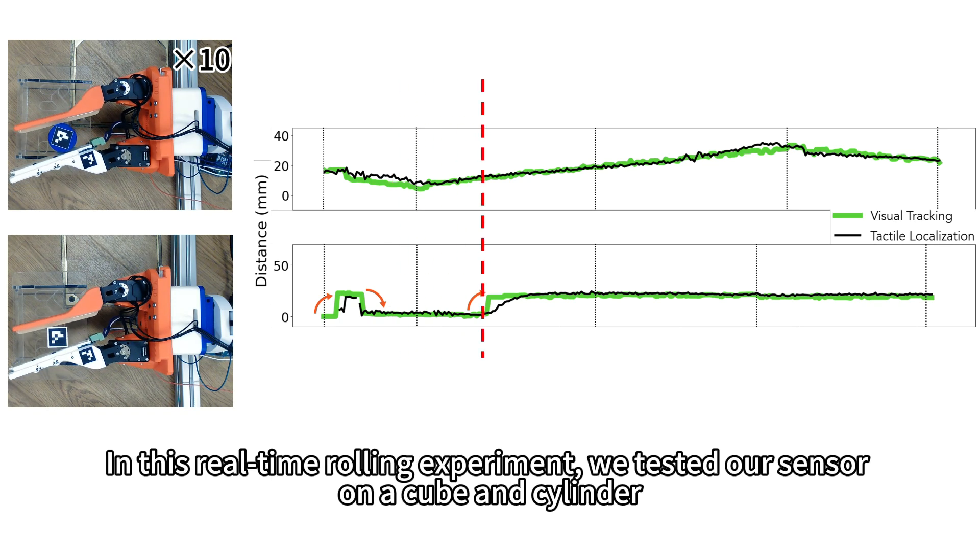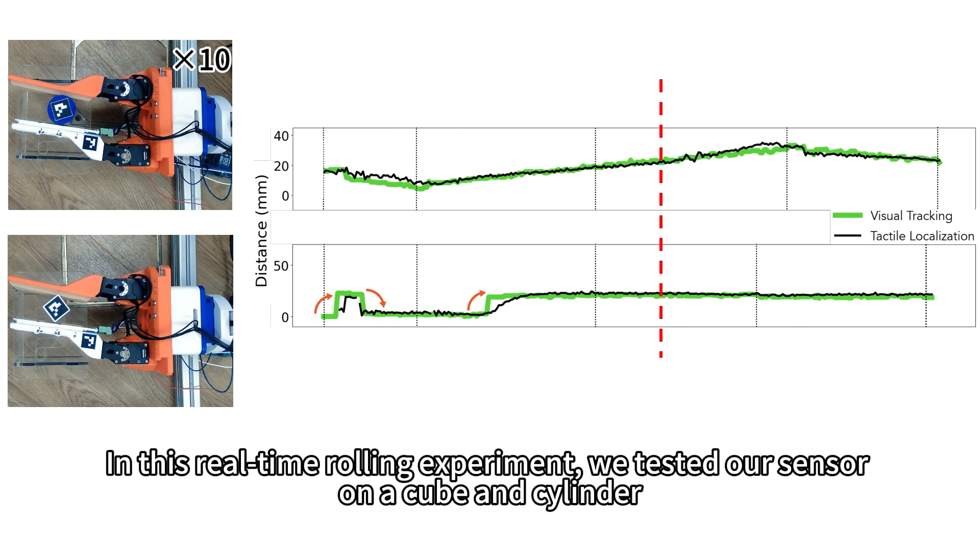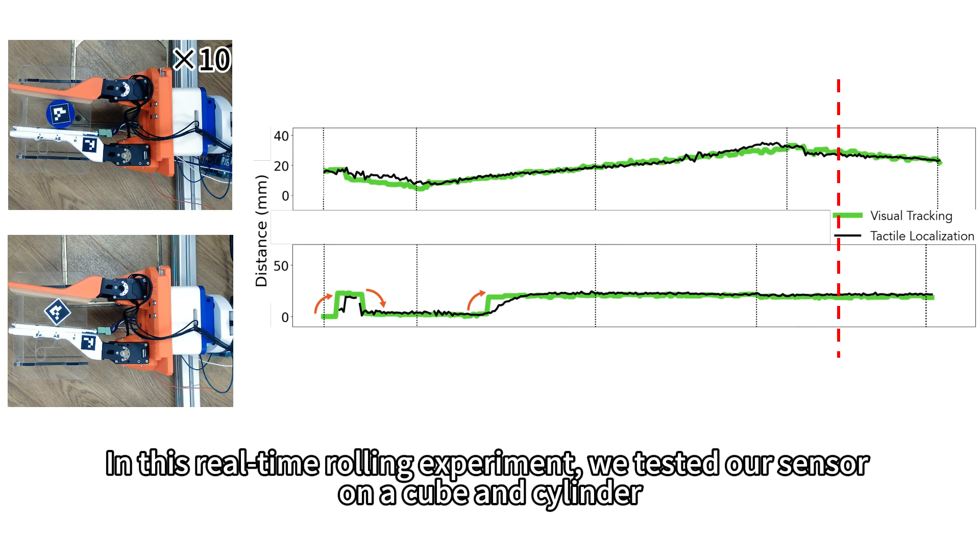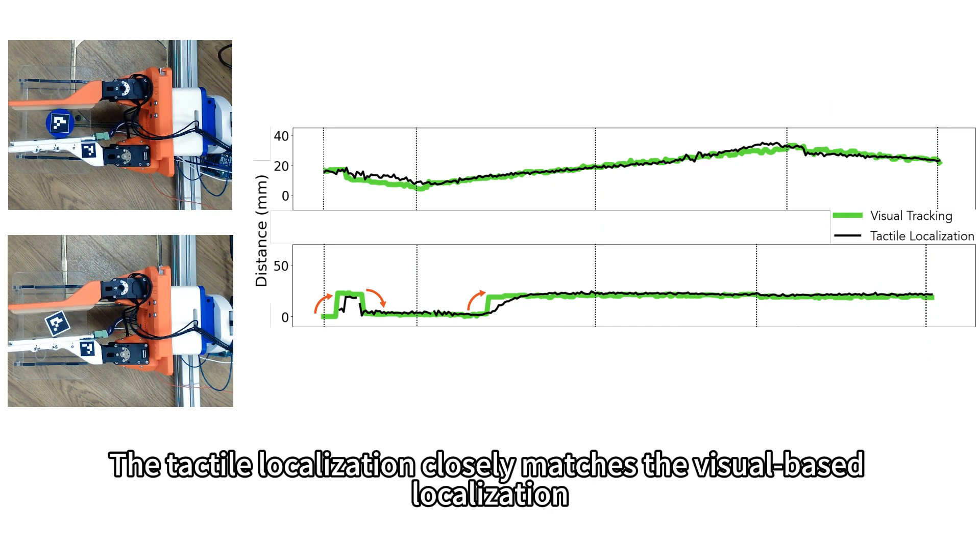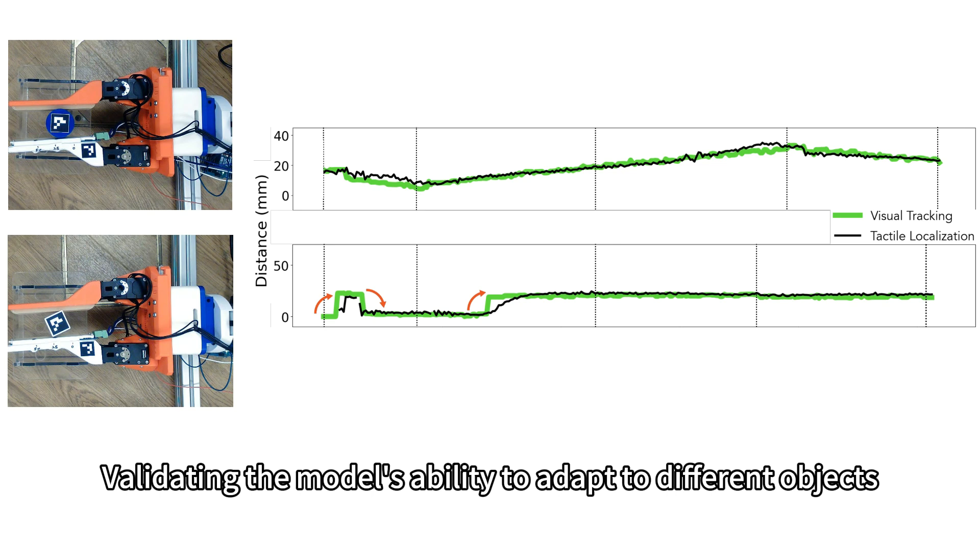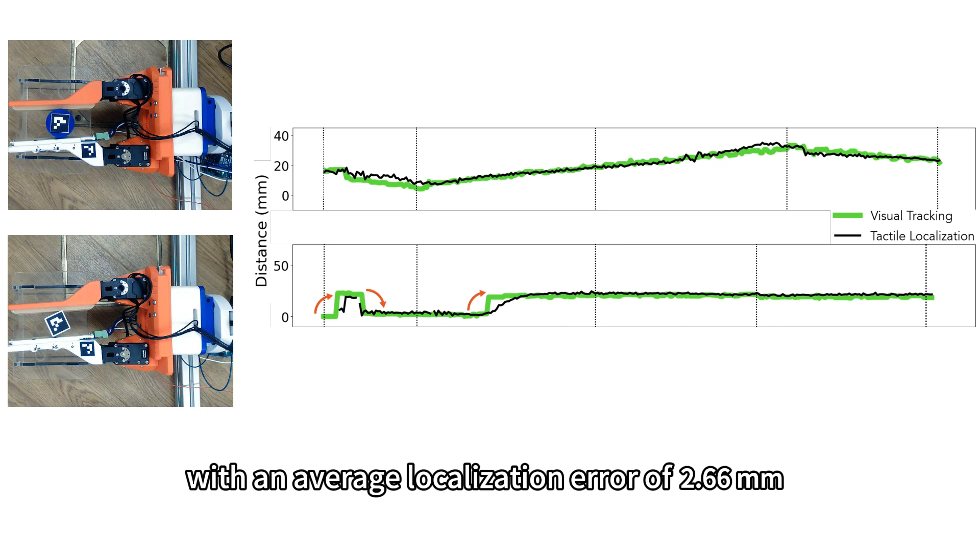In this real-time rolling experiment, we tested our sensor on a cube and cylinder. The tactile localization closely matches the visual-based localization, validating the model's ability to adapt to different objects within an average localization error of 2.66 mm.